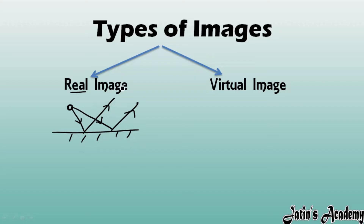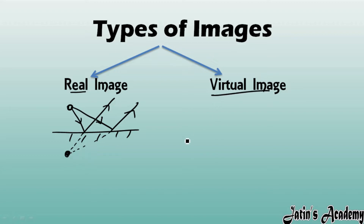But in the case of a plane mirror, the reflected rays are not going to meet at one point, because these divergent light rays will never meet in the real world. Instead, they appear to converge or meet behind the mirror. Whenever the reflected light rays appear to meet at one point behind the mirror, the image formed is known as a virtual image. This is the difference between real and virtual image.